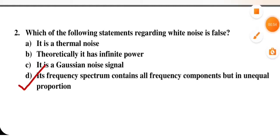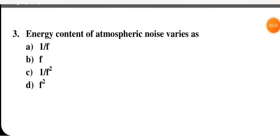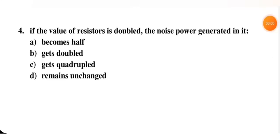Next question: energy content of atmospheric noise varies as 1/f, f, 1/f², or f². The answer is 1/f — it is inversely proportional to frequency — so A is the correct option.